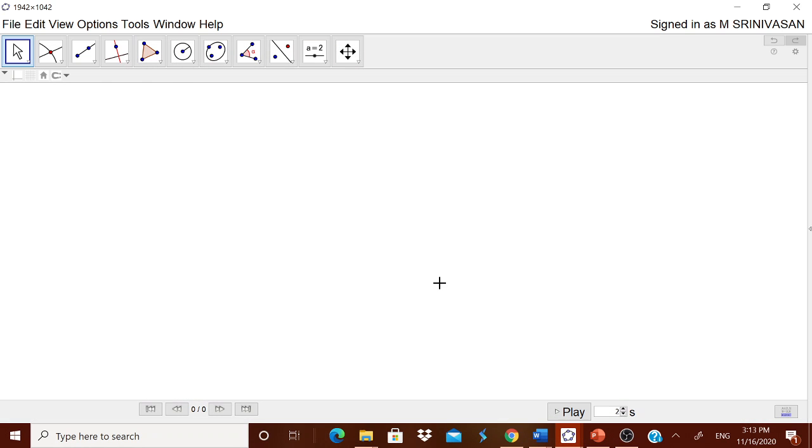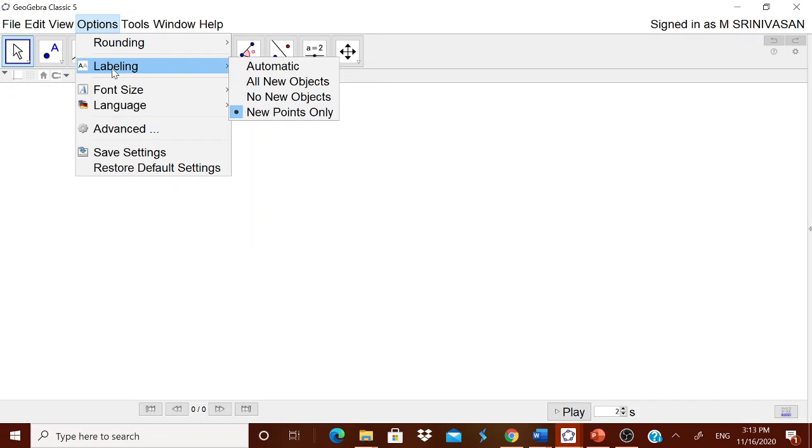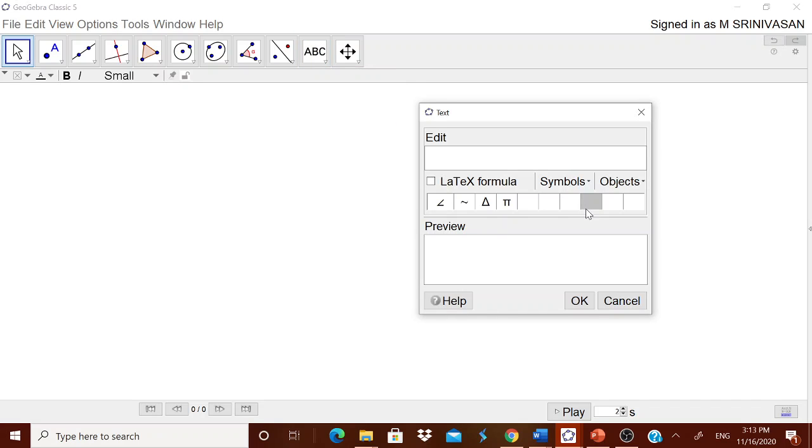For that I have selected one GeoGebra 5.0 worksheet, geometry view, in the option rounding off to zero decimal place, and in labeling new points only. First we will explain the children what you want.